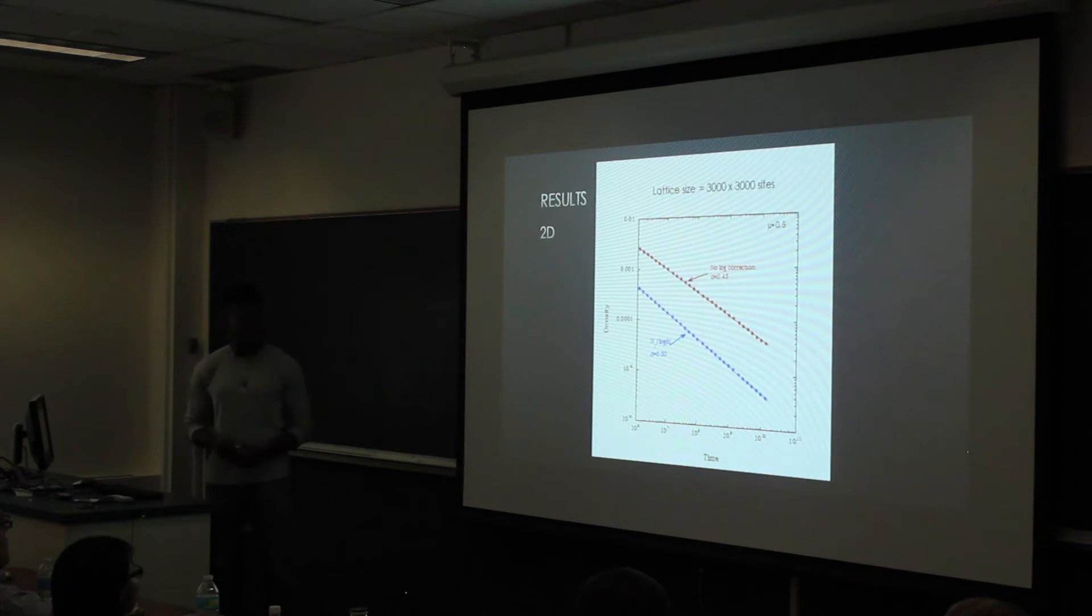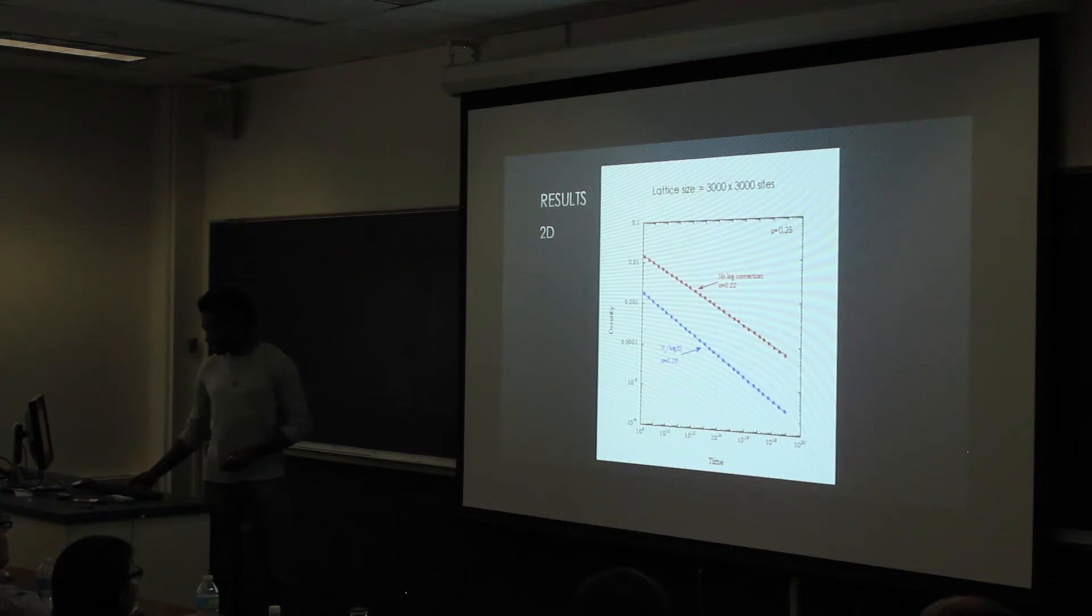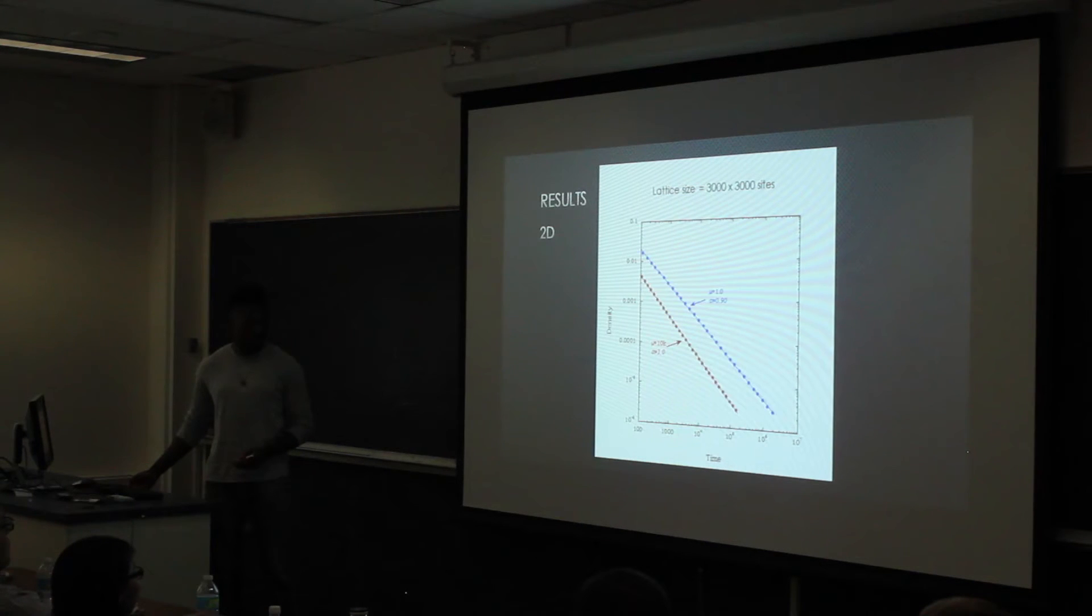And this is mu equals 0.5. And as you can see, with the log correction, it fits the data very well. And this is mu equals 0.25, so you can fit the data much better with the correction for the log.